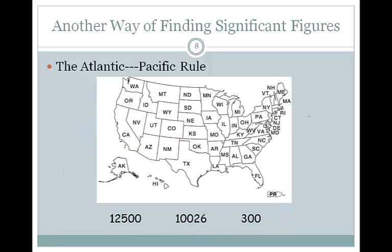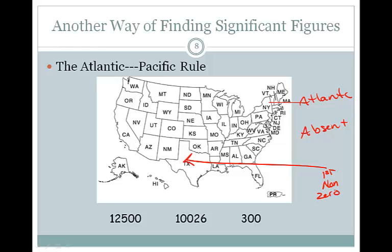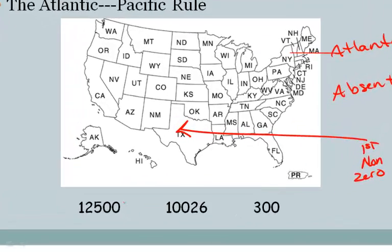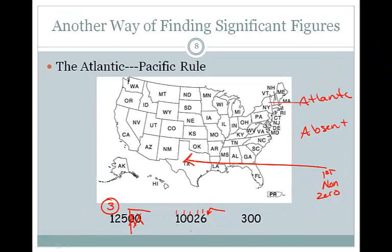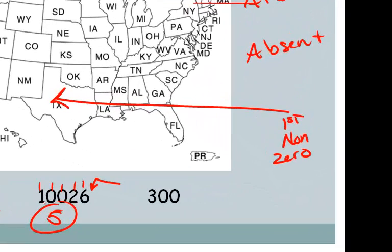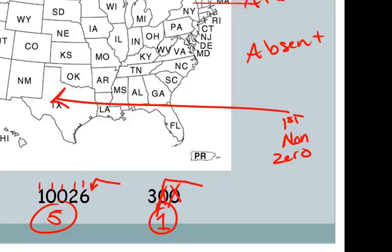If the decimal point is absent, we start counting from the Atlantic side — from the right — moving across from the first non-zero number. In 12,500, there is no decimal point, so we start counting from the right: those zeros are not significant, so 12,500 has three significant figures. In 10,026, no decimal point, so we start counting from the right: 1, 2, 3, 4, 5 — five significant figures. With an absent decimal point in 300, we start counting from the right; the zeros are not significant, so only one significant figure.